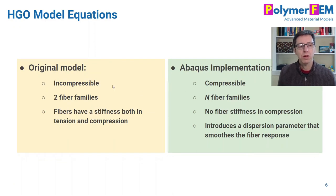So to summarize, the original paper was incompressible, two fiber families, with stiffness in both tension and compression. In Abaqus, you can have more fiber families, no stiffness in compression, and you have this dispersion parameter that you can specify. You can always make it zero if you like, but you can also make it have a little bit less strong influence of the fibers and a little bit more matrix.